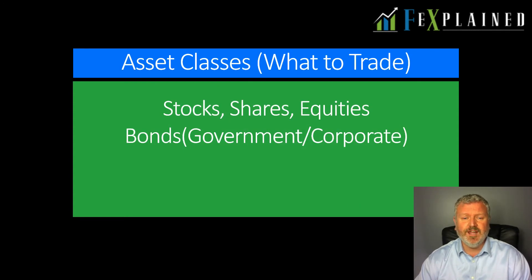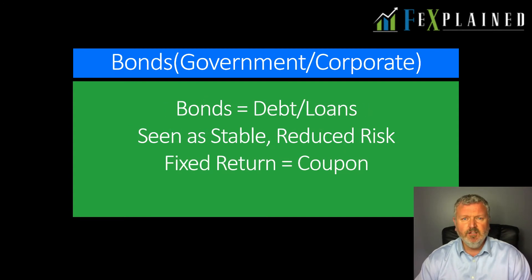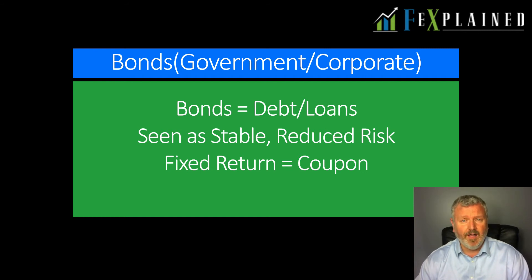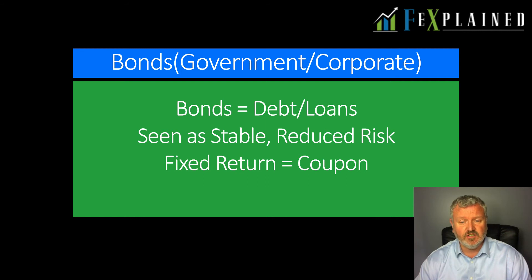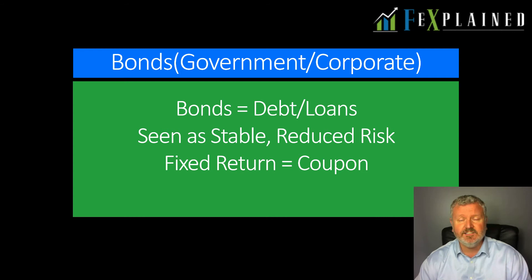We're going to move on now and talk about bonds — government and corporate bonds. Bonds are actually debts or loans; they're the credit markets. What this means is the individual trader or investor is loaning money to the borrower, usually a government or a corporate. These are seen as more stable, particularly government bonds, because they are backed by a government. They have a reduced risk compared to equity markets, and you also get a fixed return. These are also called credit or fixed income markets — you get a fixed return on your investment, which is called the coupon.